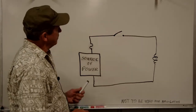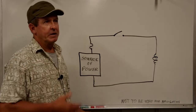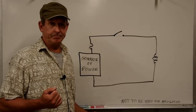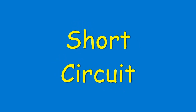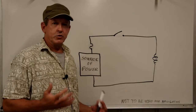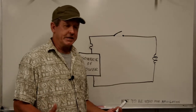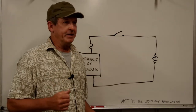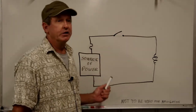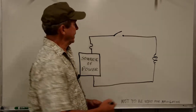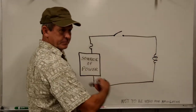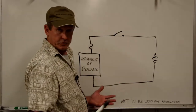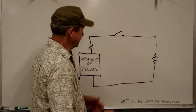Now let's talk about probably the most common term thrown around out there — a short circuit. When we're talking about a short circuit, what exactly is it? A short circuit is exactly like it sounds: we have given our electrons a shorter circuit. If we imagine our circuit here — circuit protected, we can on/off control it — we have our appliance doing the work that we want it to do.